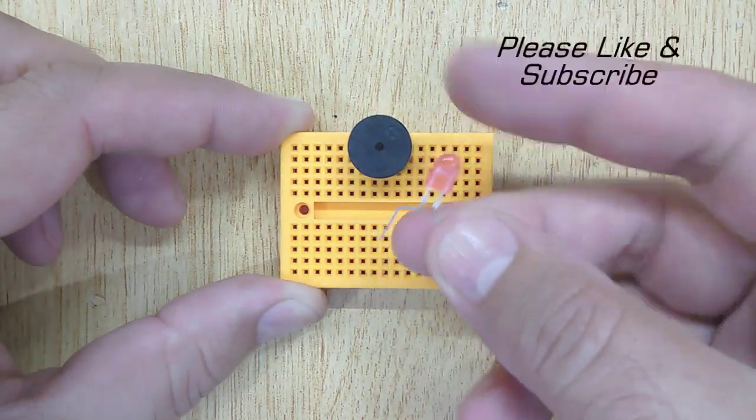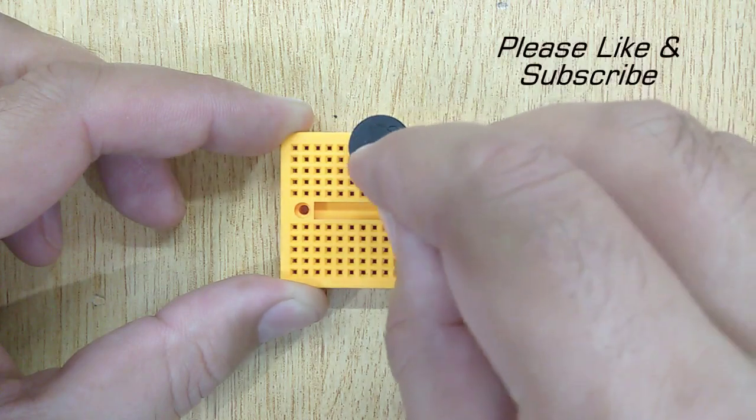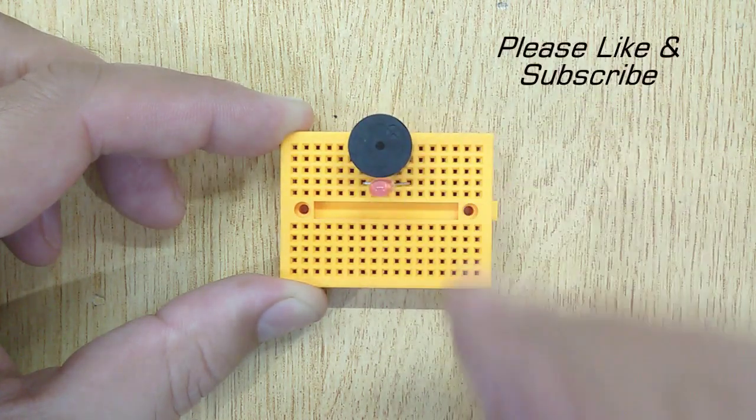Then connect the positive pin of the LED with the positive pin of the buzzer, and connect the negative pin of the LED with the negative pin of the buzzer.